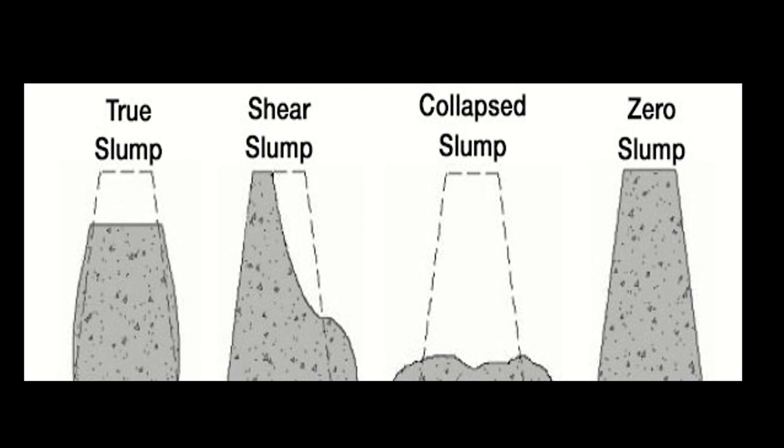There are four terms regarding slump: true slump, shear slump, collapse slump, and zero slump. True slump is when the subsided concrete is not more than five centimeters. Shear slump is when half of the concrete is falling down. Collapse slump is when the entire concrete collapses after lifting the cone. Zero slump means no concrete falls down at all, indicating very, very low workability.